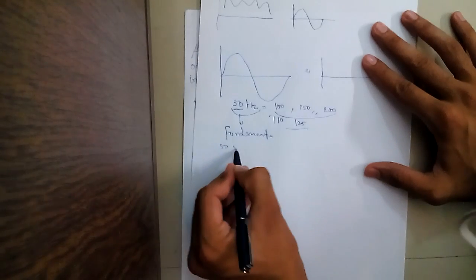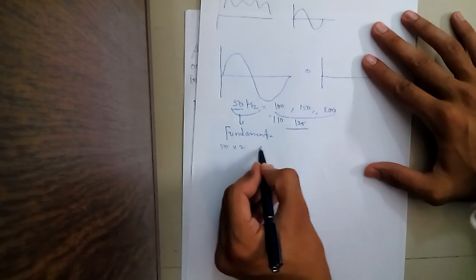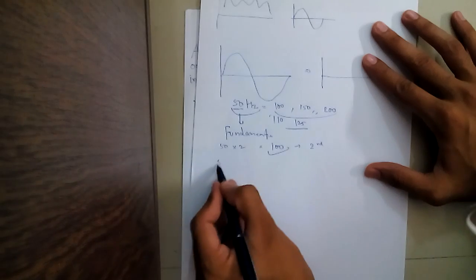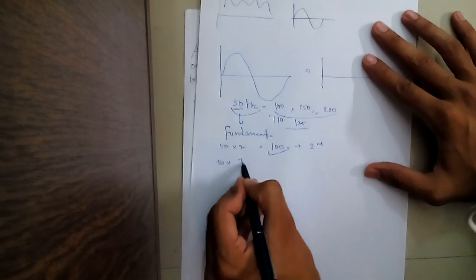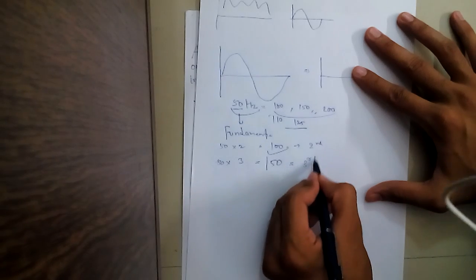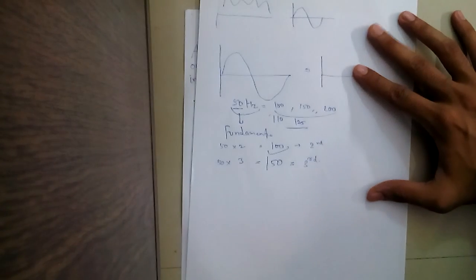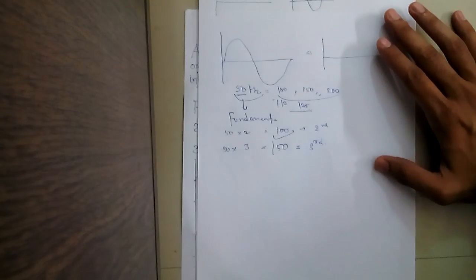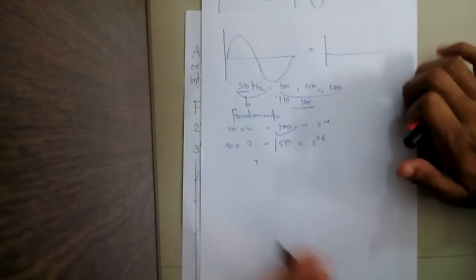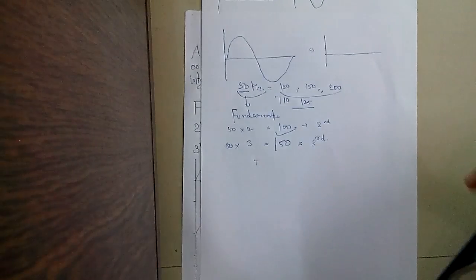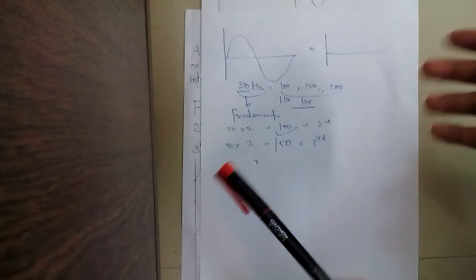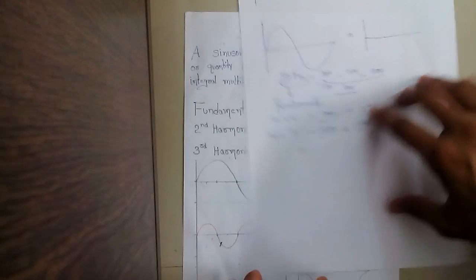So multiplied by 2, this will be called the second harmonic. Multiplied by 3, this will be called the third harmonic. Like this, there will be various harmonics — 4th harmonic, 5th harmonic, up to nth harmonic. The question arises: what causes harmonics? What are the different causes of harmonics?